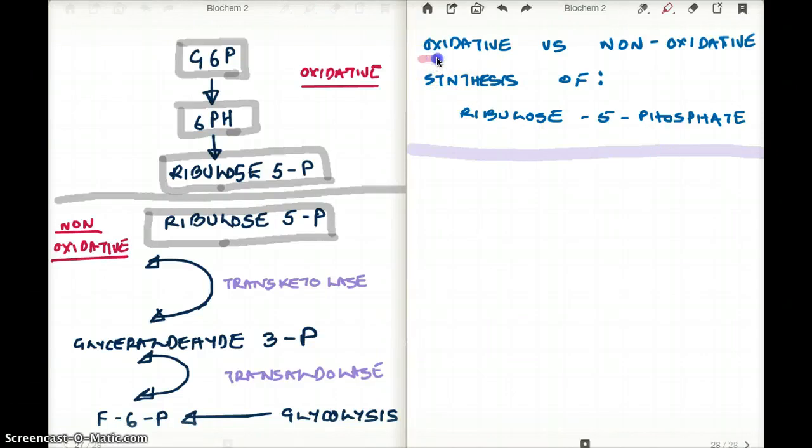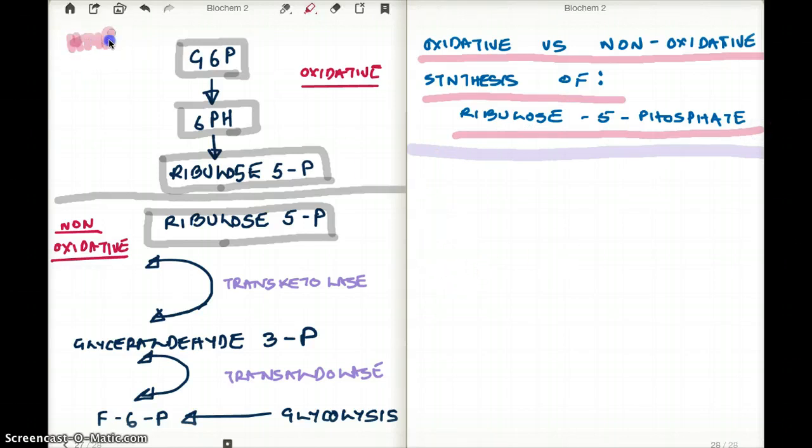This video talks about the oxidative versus non-oxidative synthesis of ribulose 5-phosphate. Typically, the synthesis of ribulose 5-phosphate happens through the HMP shunt.